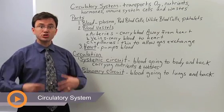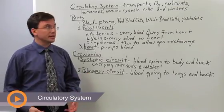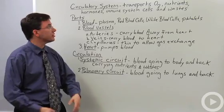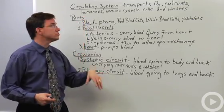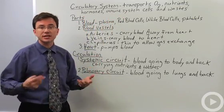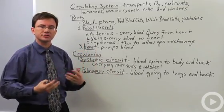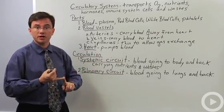The circulatory system is the major transport system of the body. Its task is to transport the oxygen your body needs, the nutrients your body needs, things like hormones, the immune system cells, things like antibodies, as well as to collect all of the waste that are being produced by your cells, especially things like carbon dioxide.